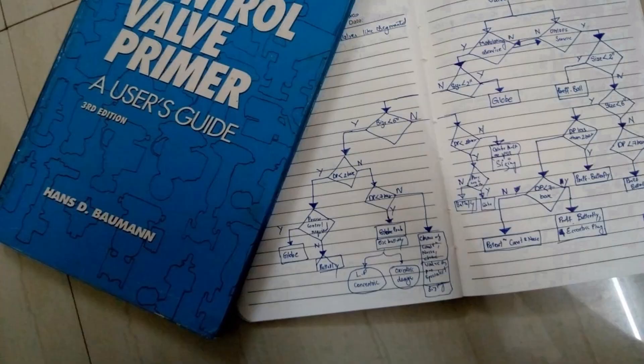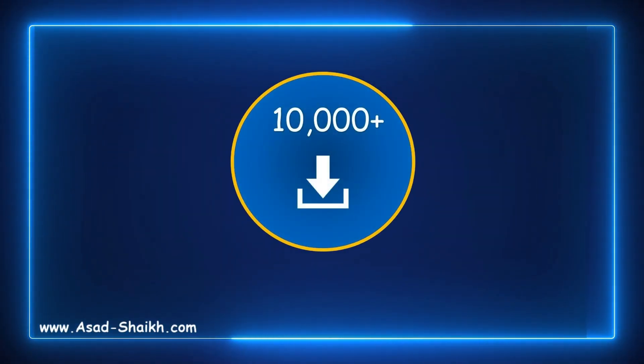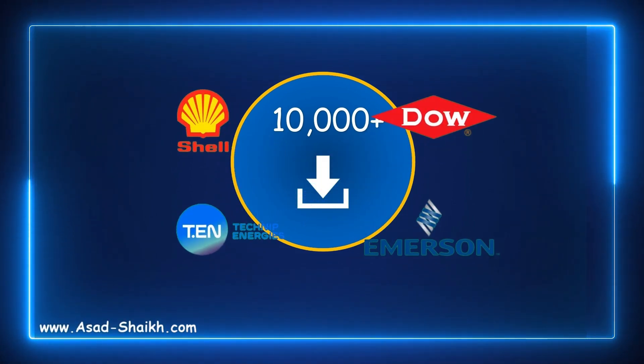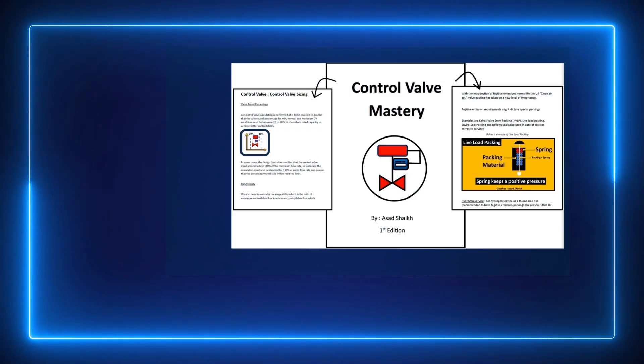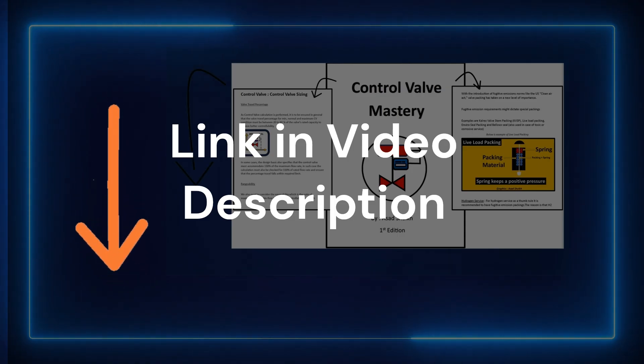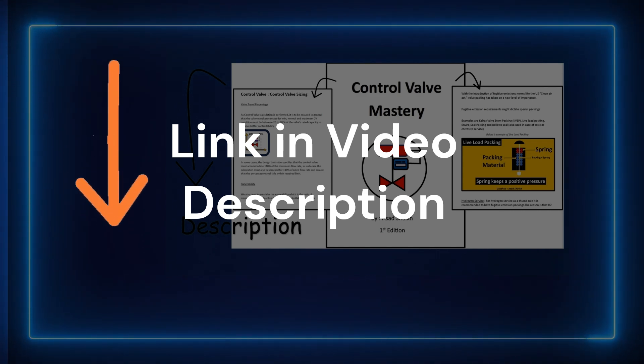For almost eight years I've been maintaining notes on whatever I learned from books such as Control Valve Primer, ISA guides, etc. A lot of information I've tried to condense in my ebook called Control Valve Mastery. It's a completely free ebook and there have been almost 10,000 plus downloads from engineers like Shell, Dow, Technip, Emerson, just to name a few. If you're interested you can download this ebook and also join a newsletter where I share learnings from all of these ebooks free every single week.